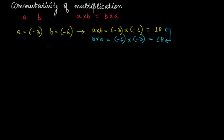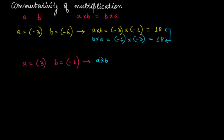Let's take another example where a is equal to three and b is equal to minus six. In this case, a times b will be three times minus six.